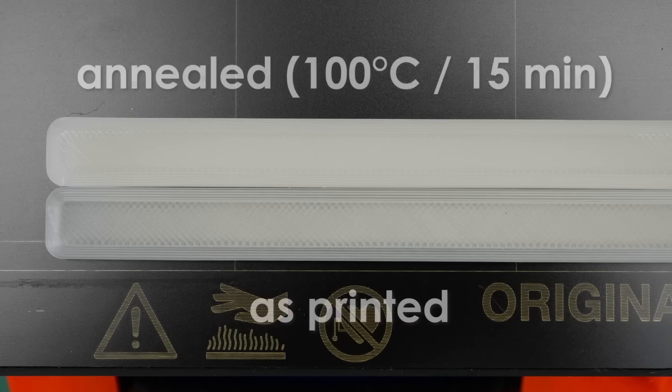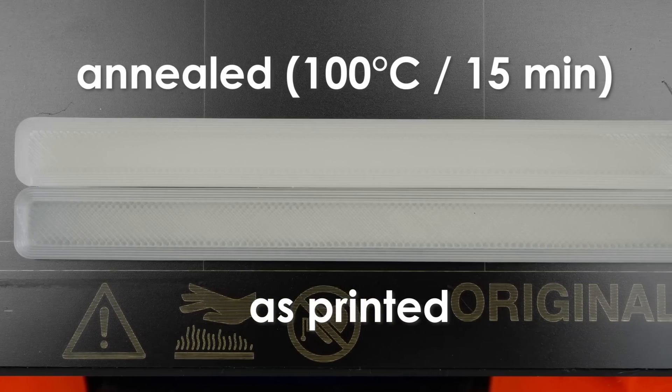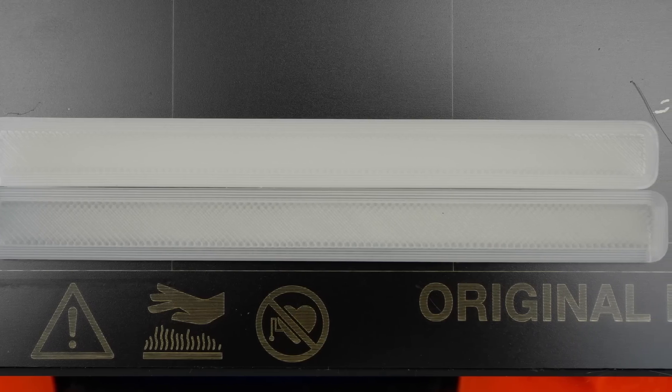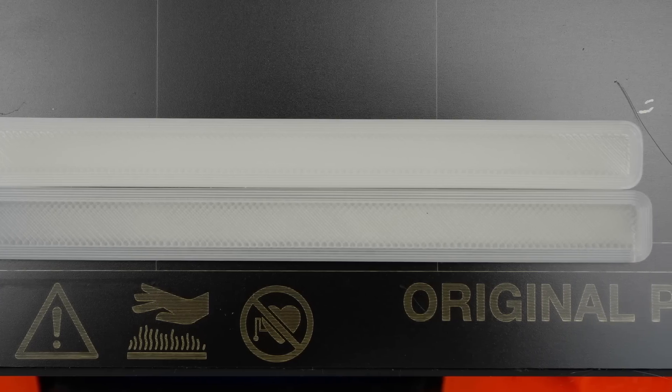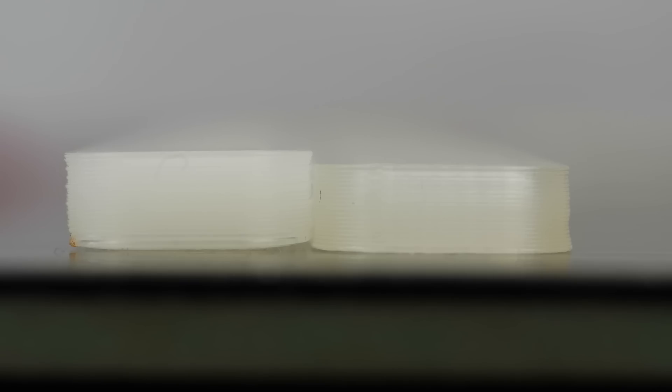This is especially interesting for the annealed PLA specimens. Not only do we see that it is less translucent than the unannealed one, but it also changed its shape quite a bit during the crystallization that happened during the annealing process. It got shorter but also quite a bit thicker, which definitely needs to be taken into consideration for the test evaluation.